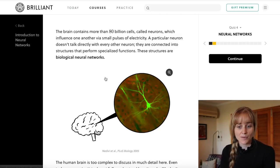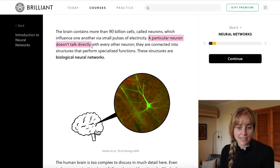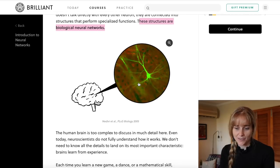So it says here the brain contains more than 80 billion cells called neurons which influence one another via small pulses of electricity. A particular neuron doesn't talk directly with every other neuron. They are connected into structures that perform specialized functions. These structures are biological neural networks. We've got a little picture of a neuron here.